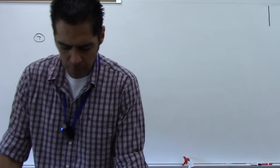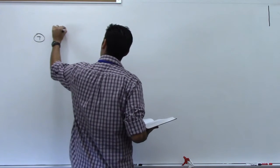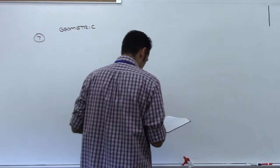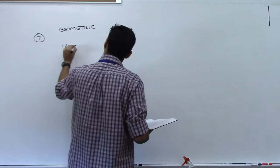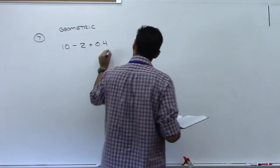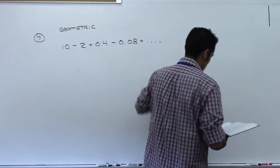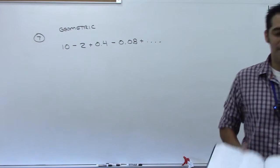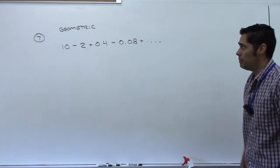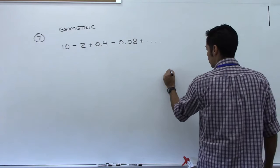The instructions say to determine whether the geometric series — and they're telling us it's geometric, which is nice. On a test, I normally won't tell you that. The series is 10 minus 2 plus 0.4 minus 0.08 plus dot dot dot. Determine whether it's convergent or divergent, and if convergent, find its sum. For geometric series, we actually have two formulas.